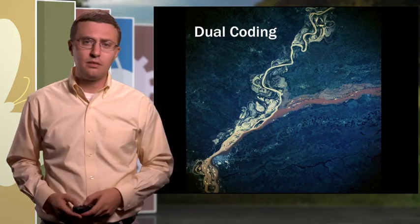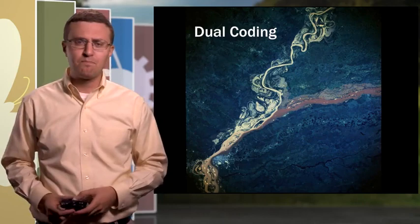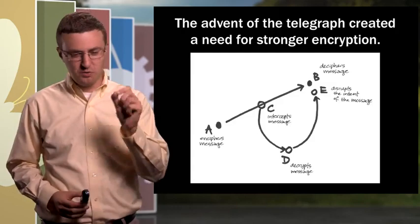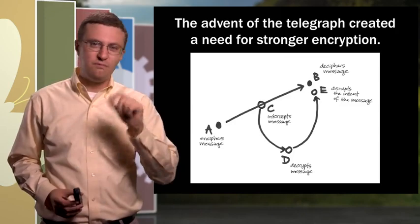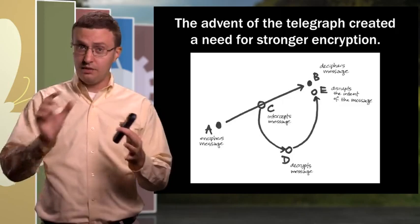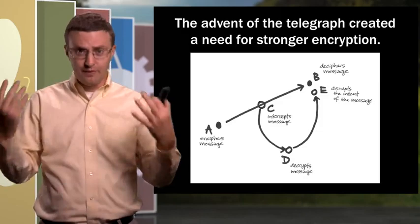So what might this look like in the college classroom? Well let's look at a few examples just briefly from a few classes that I've taught. This is from a cryptography course that I teach occasionally. And we look at the history of cryptography and one of the things we talk about is how the advent of technologies like the telegraph changed the world of encryption and cryptography. So for this slide I have some text on the slide. It's not a lot. It's this one statement at the top. The advent of the telegraph created a need for stronger encryption.